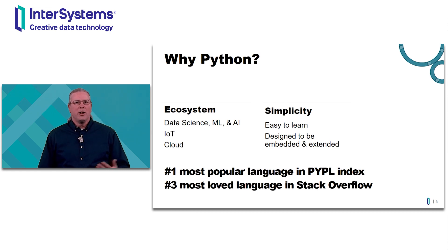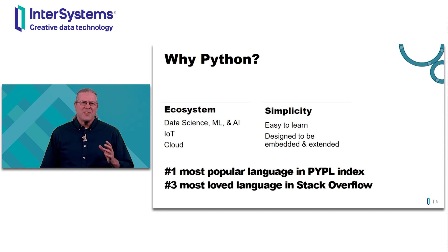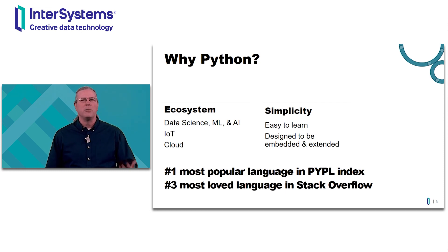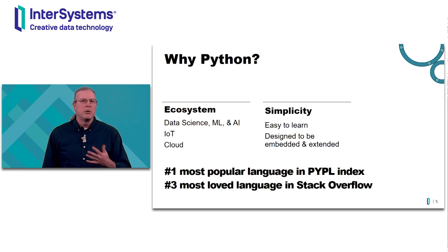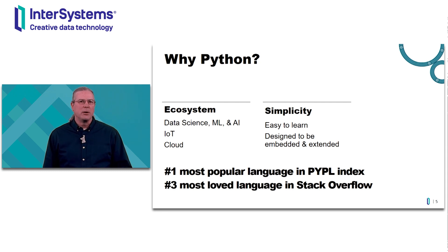So why did we choose Python? We chose Python for three main reasons. There's the ecosystem, first and foremost — there are thousands and thousands of high-quality packages pre-built and available today, especially in areas like data science, IoT, bioinformatics, and the cloud. Python's also been around since 1991, and it's still in use today. It's growing in popularity, in part because it's a very easy language to learn.